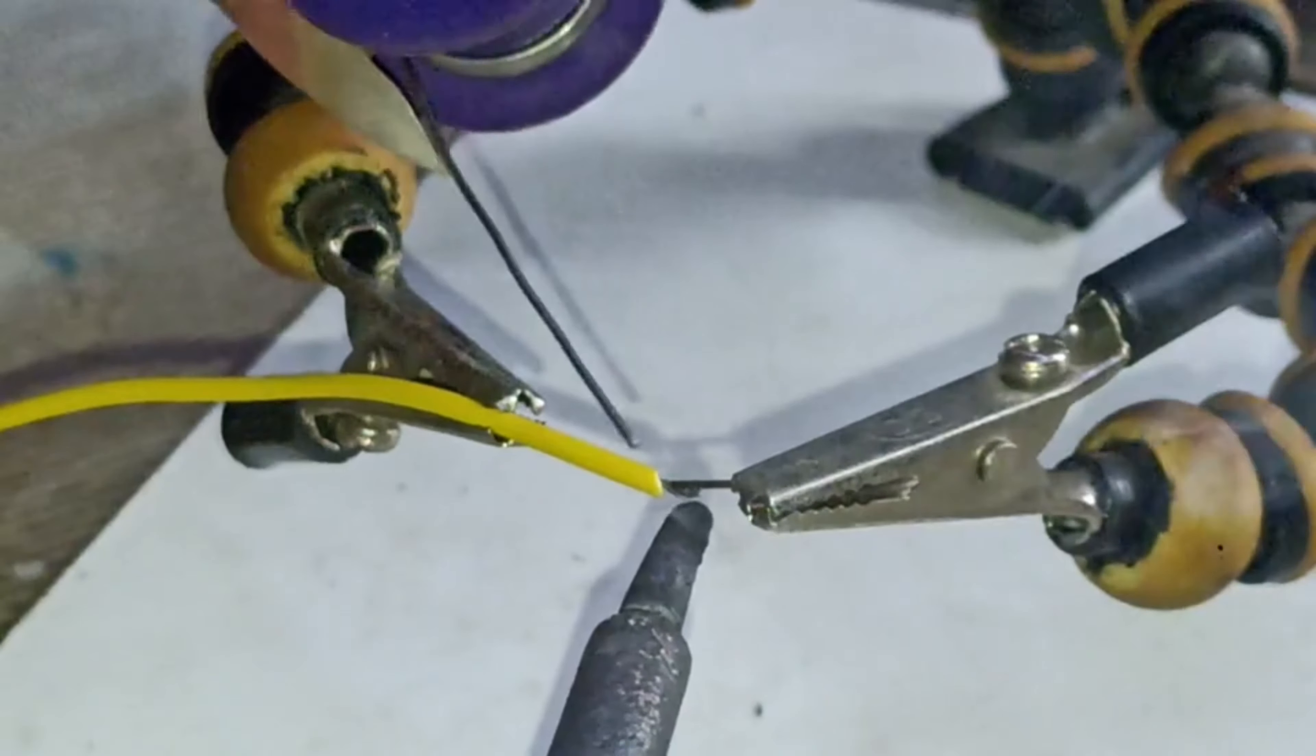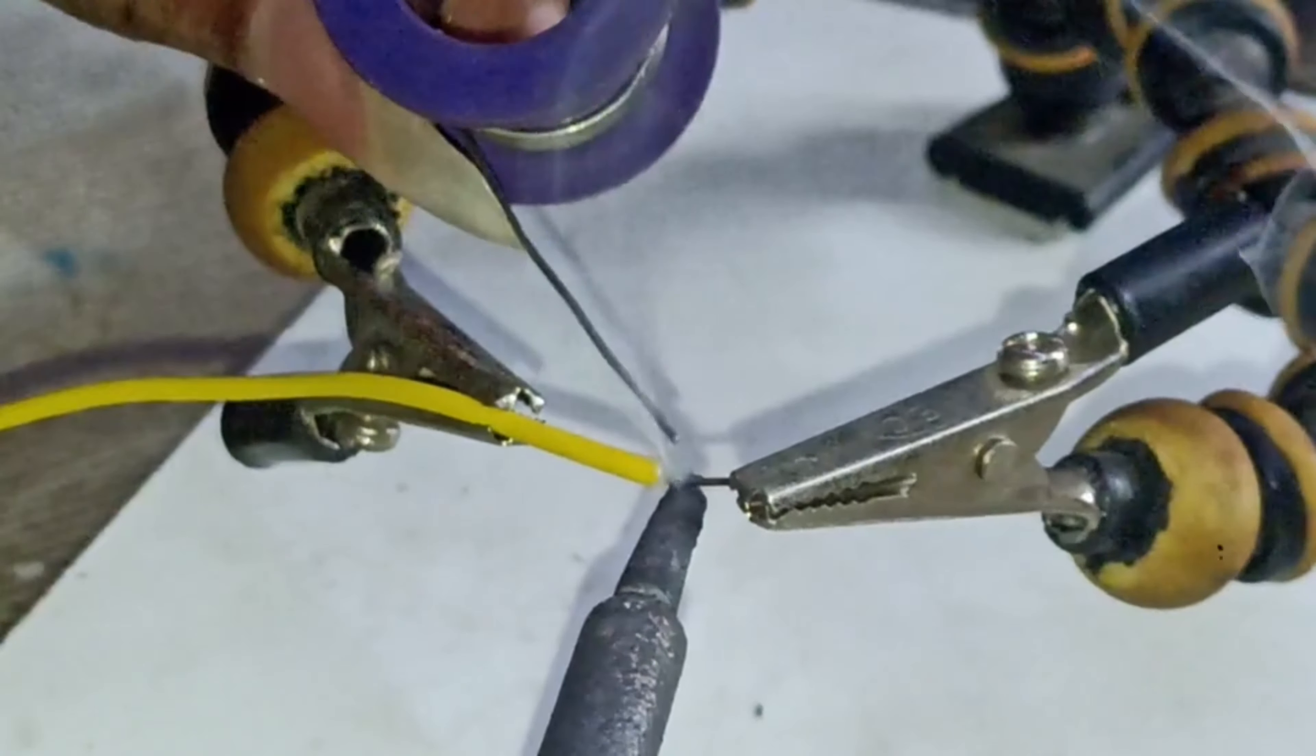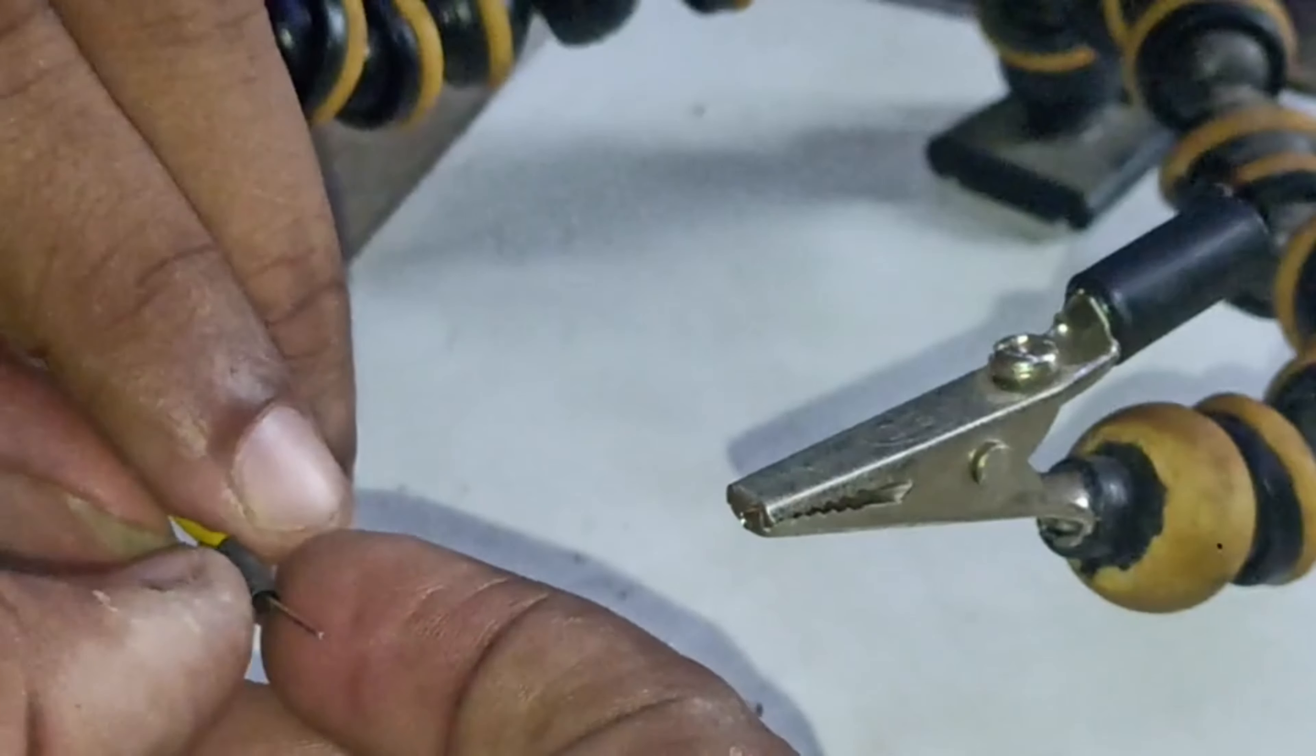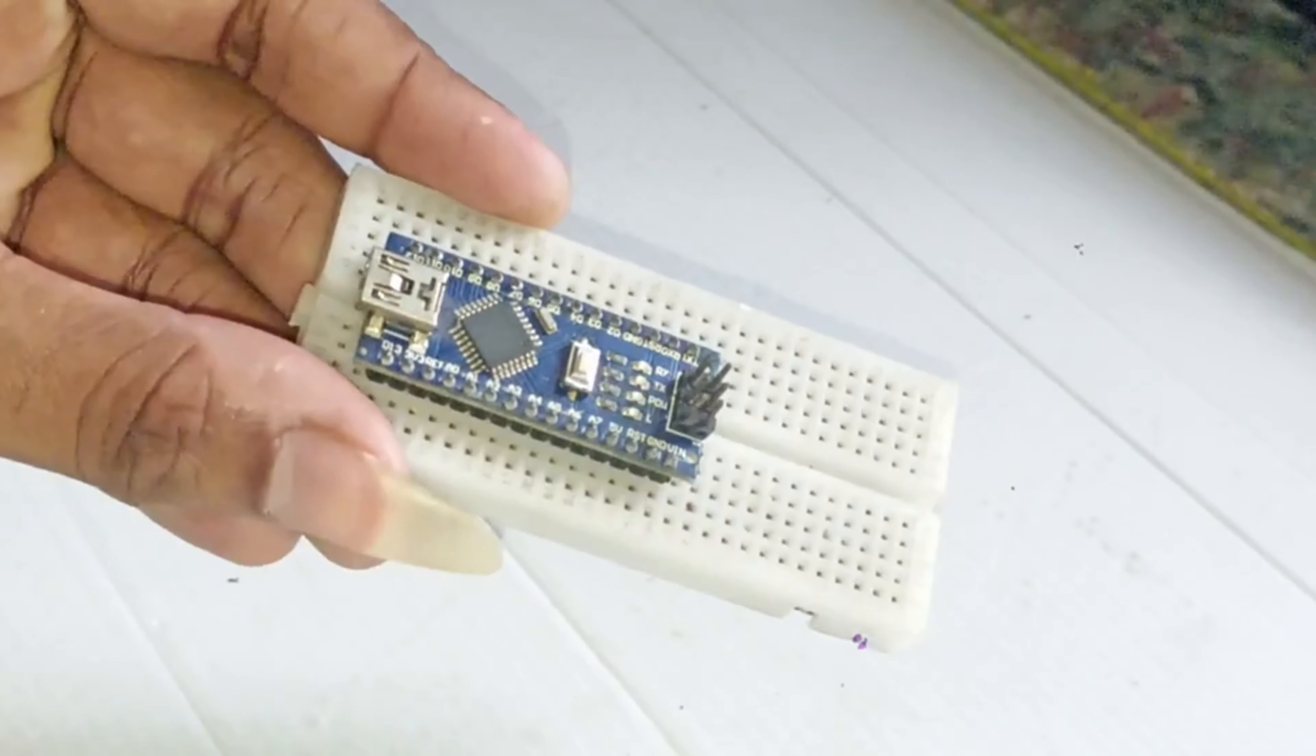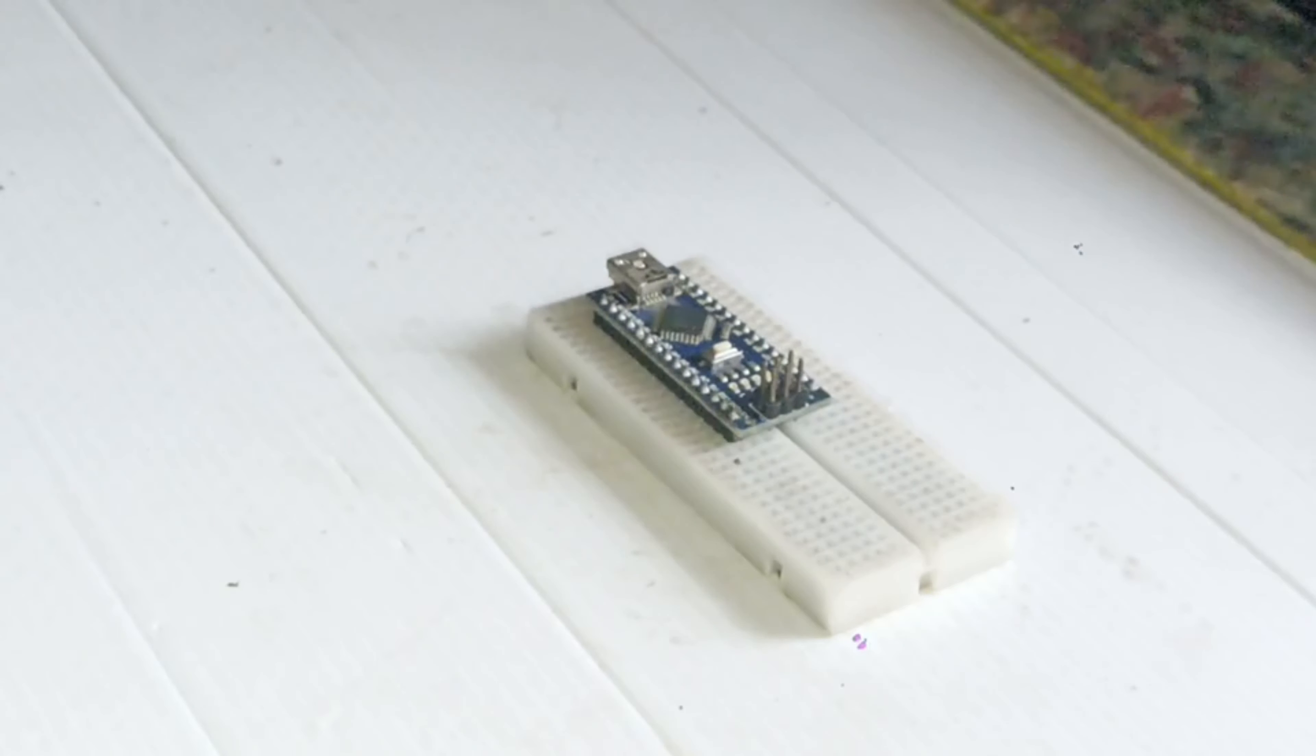So now in the other side of the wire I am soldering a jumper wire so that it will be easy to connect it with the breadboard. Now I am connecting this heatsink tube and now it's done. So now we need to use the Arduino Nano and I have connected it to a breadboard already.